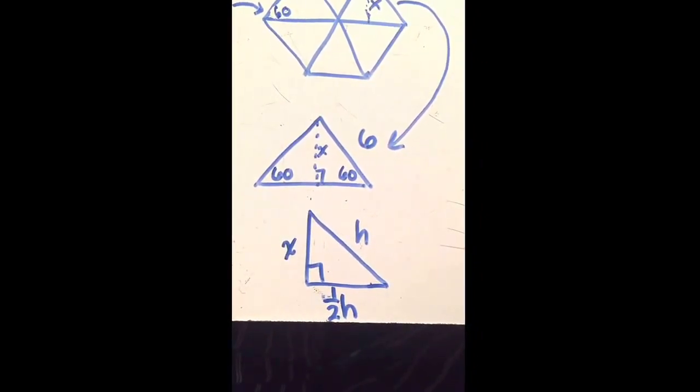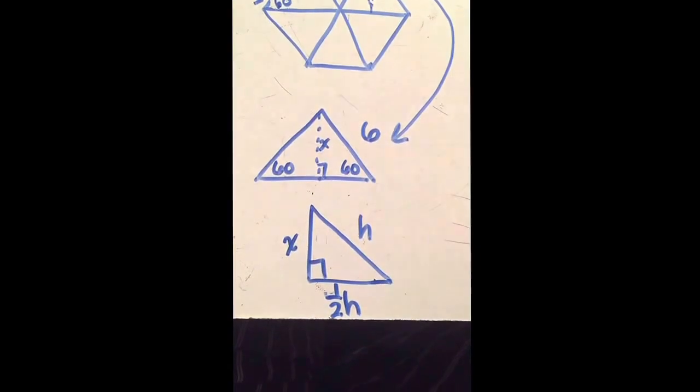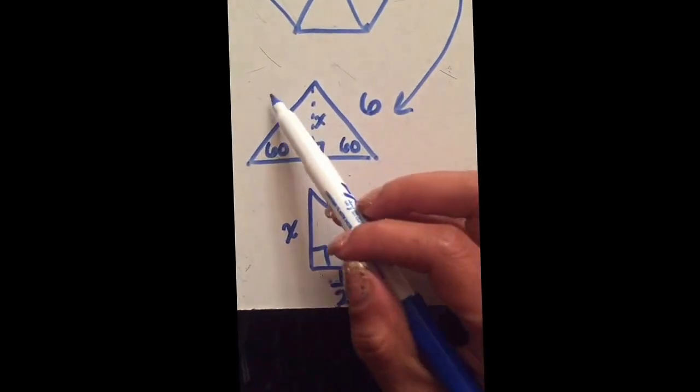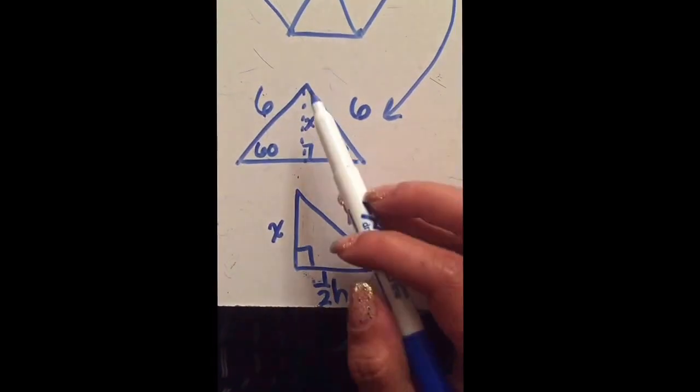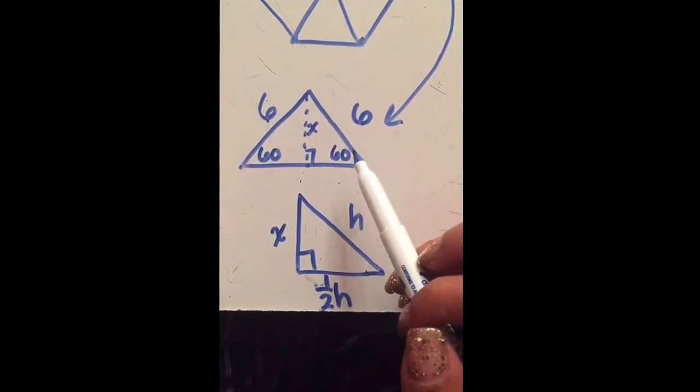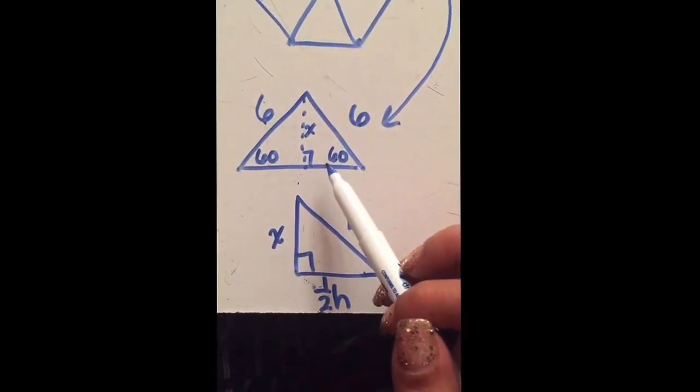Yes, it is still a 30-60-90 triangle and I knew that one side—all the sides are 6—but I knew that I can kind of make a right triangle and play with that because I remember my Pythagorean theorem very well: a squared plus b squared equals c squared.